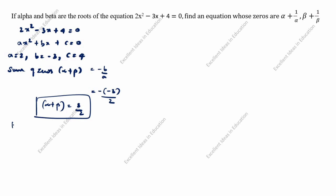Next, the product of zeros: alpha × beta = c/a. The value of c is 4 and a is 2, so we cancel the 2. Therefore, alpha × beta = 2.